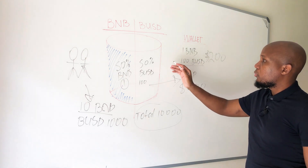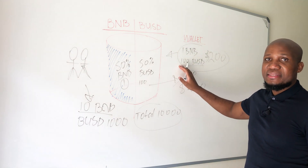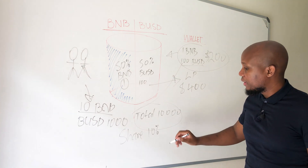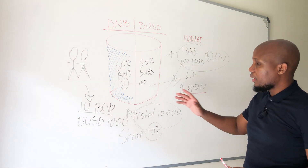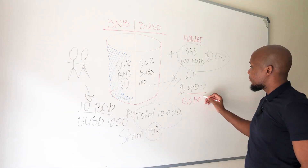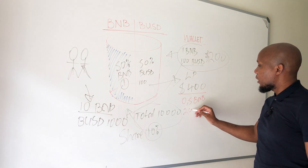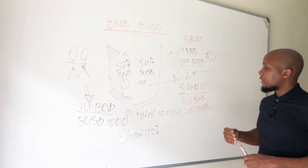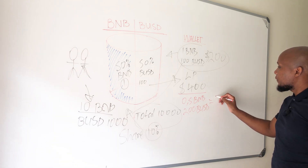Earlier we had one BNB in the pool. Remember, when you put funds into a liquidity pool, you're no longer entitled to those specific funds — however, you're entitled to a share. We hold 10% of this pool. Now that BNB is at $400, our 10% of the pool gives us 0.5 BNB. So we no longer have that one BNB — we have 0.5 BNB, and it's also giving us 200 BUSD. Because BNB is trading at $400, 0.5 of that gives us $200, plus another $200, for a total of $400.